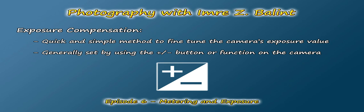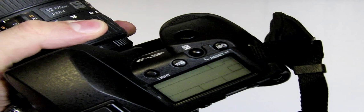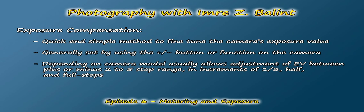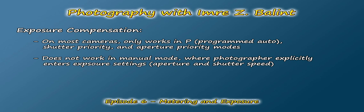The last method I'm covering is exposure compensation, where we adjust the exposure value that the camera has come up with to suit our needs. The exposure compensation button is usually represented with the plus or minus icon, and depending on your camera model, it may allow you to adjust the exposure value anywhere within a plus or minus two to five stop range, usually in increments of third, half, and full stops. Exposure compensation only works when your camera is in P or programmed auto, shutter priority, or aperture priority modes. In manual mode, you've already specified exactly what the exposure should be by selecting the shutter speed and aperture yourself.